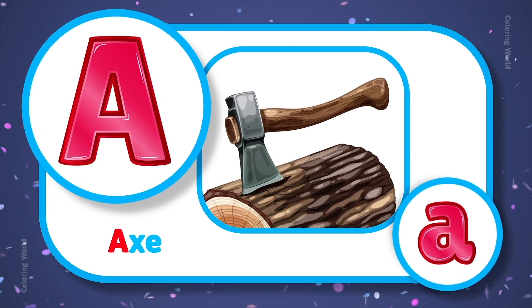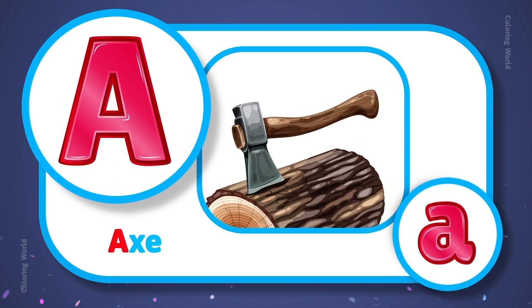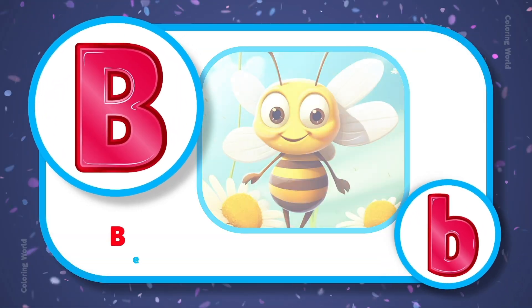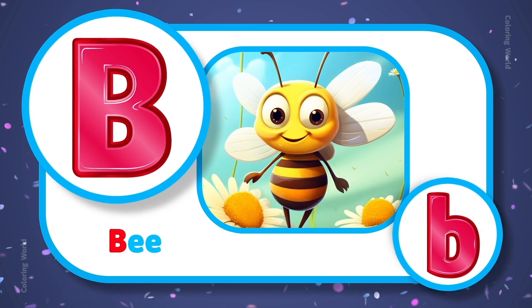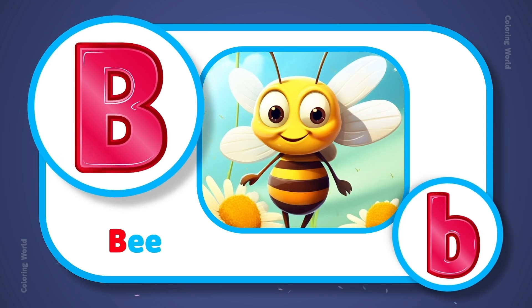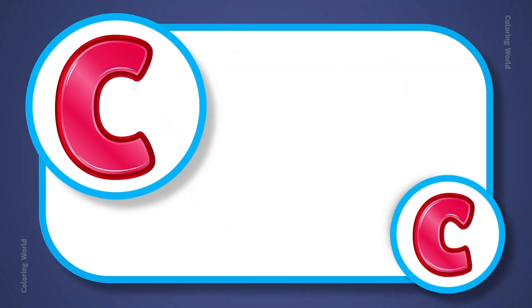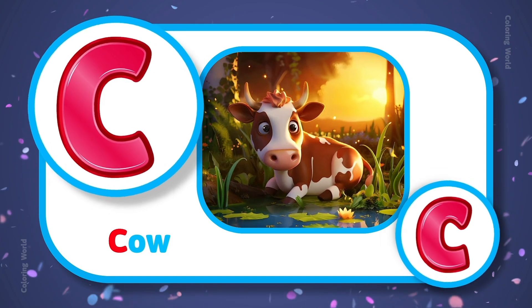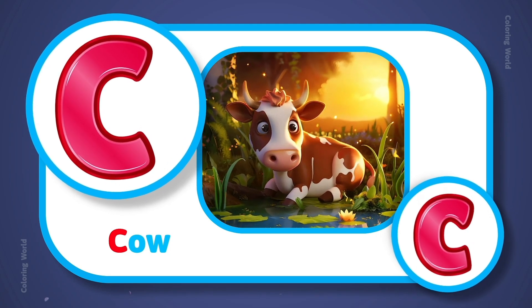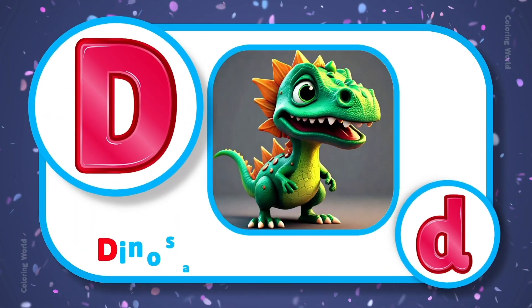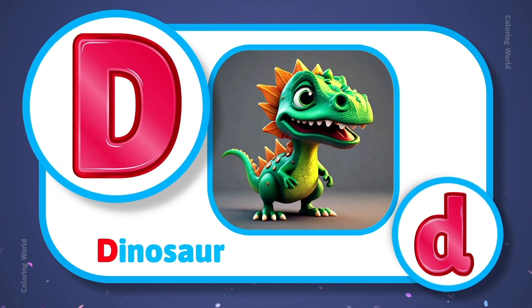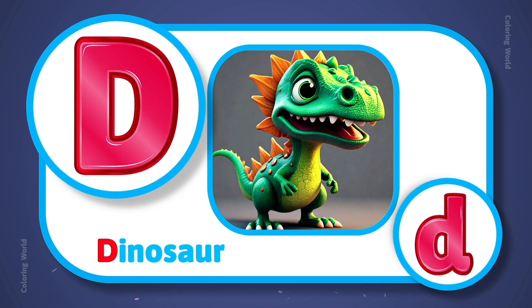A is for ax. B is for ball. C is for cow.